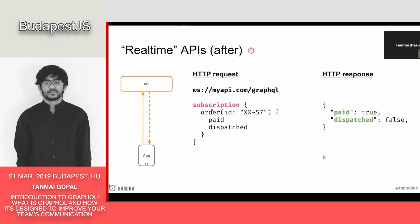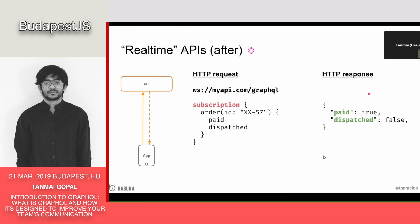With GraphQL, the experience is that you create something called a subscription. You say: I want order where the order id is 57, and I want these two fields. In the response you keep getting events that have the same shape as what you requested. Every time the data changes, you get an event automatically. Underneath it still uses WebSockets, but as a front-end developer I don't have to deal with WebSockets. That abstraction is taken care of by the community who have written good GraphQL clients. I don't have to deal with that work.